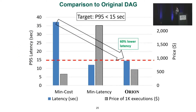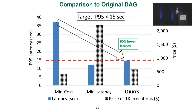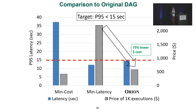The first comparison shows how Orion performs relative to the original DAG. For the original DAG we have two settings: minimum VM sizes for all functions to achieve minimum cost, and maximum VM sizes to minimize latency. On the primary y-axis I show P95 latency, while on the secondary y-axis I show price. Orion minimizes latency and achieves 60% lower latency compared to minimum cost, and also achieves 73% lower dollar cost compared to minimum latency.